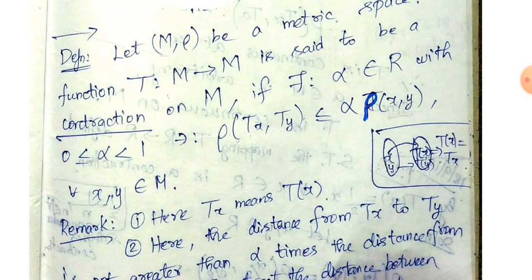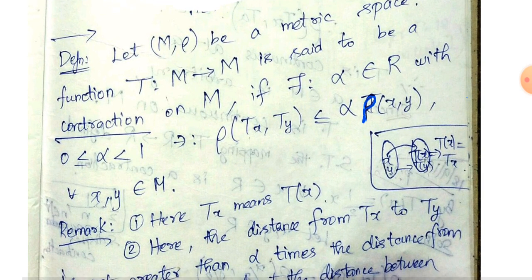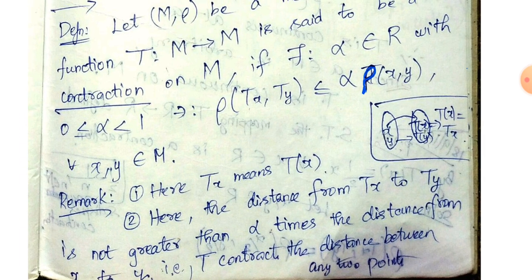ρ(Tx, Ty) ≤ α, where α is less than 1 and greater than 0. In this condition, the mapping T is called a contraction. If you look at Tx, the meaning is T of x — Tx is the notation for T of x. This is the image of Tx. For all x and y belonging to M.